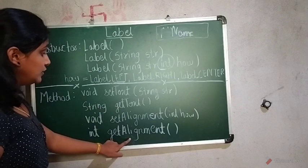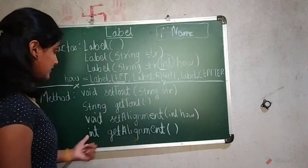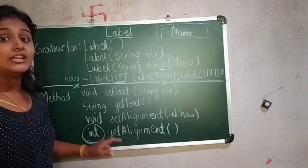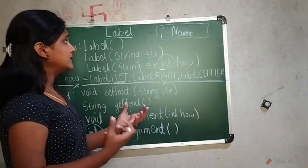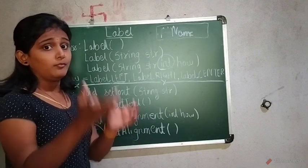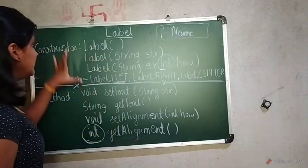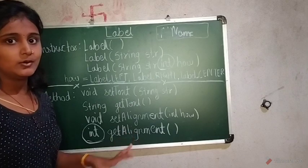Now here I wanted to know what exactly is the alignment of the label. So for that purpose, I will use the getAlignment. And what is the return type? It's very important. The return type is integer. So this will return what exactly is the alignment of my label. So this was regarding the label, the constructor and the method.